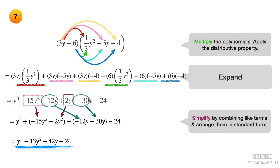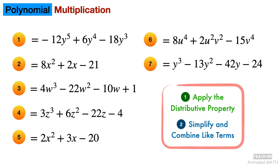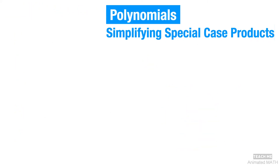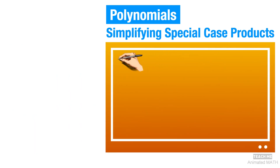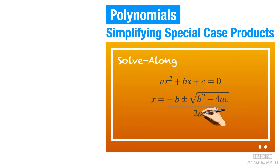And that's it! I hope you learned a lot in the fourth video of our animated polynomial series. Polynomial multiplication is simple as long as you remember to apply the distributive property and combine like terms. In our next video, you will learn how to simplify polynomial special case products — useful shortcuts that will help you simplify polynomial expressions faster. It's a solve-along worksheet with step-by-step solutions that are very easy to follow. So be sure to subscribe to Teach Me Animated Math, and don't miss out! See you next time!